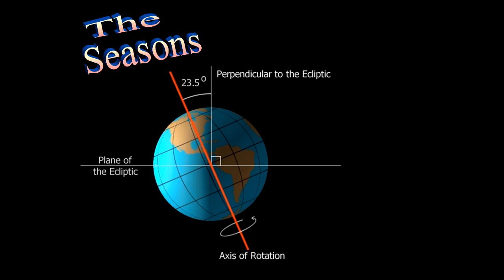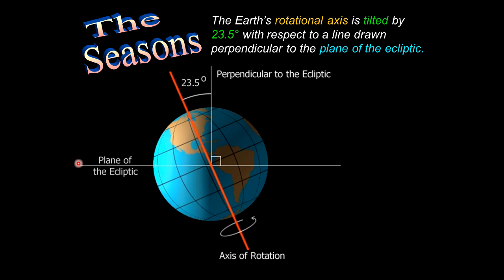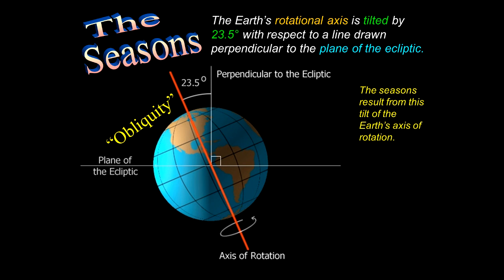Now we discuss the seasons. As the Earth goes around the sun on this ecliptic path, the Earth is tilted with respect to the plane of the ecliptic by 23.5 degrees. This is also called the obliquity — a fancy term for the tilt of the Earth. And the seasons result from the tilt of the Earth's rotational axis as it orbits the sun.